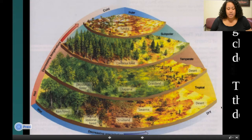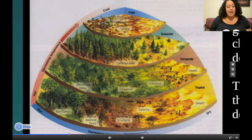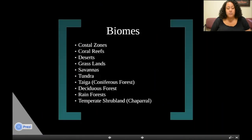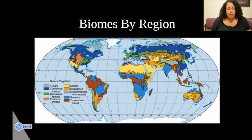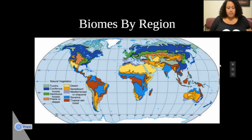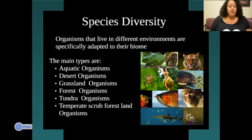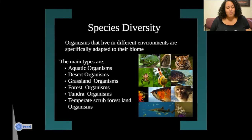Going back to this picture — deserts, for instance, are dry and hot, while rainforests are hot and wet. You can look at the chart to see what the climate is like for each biome. This picture also depicts the biomes by region. Organisms that live in different environments are specifically adapted to their biomes. The main types of organisms include aquatic, desert, grassland, forest, tundra, and tropical shrubland organisms.